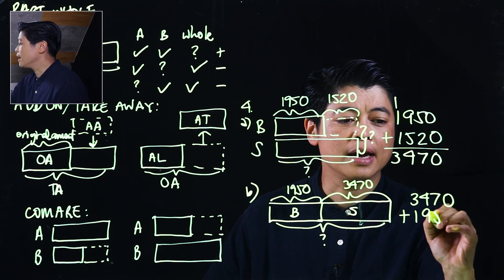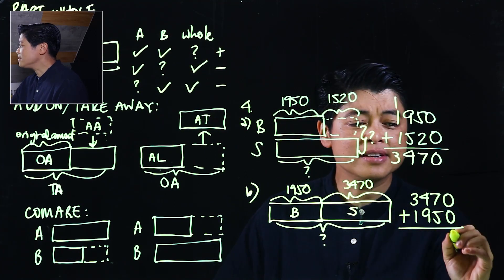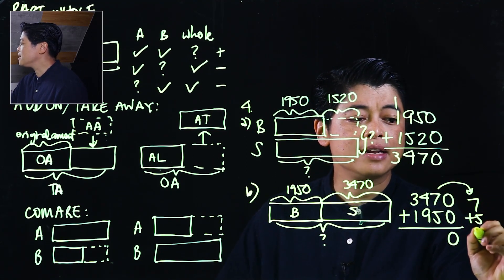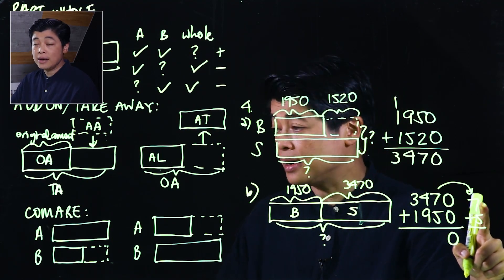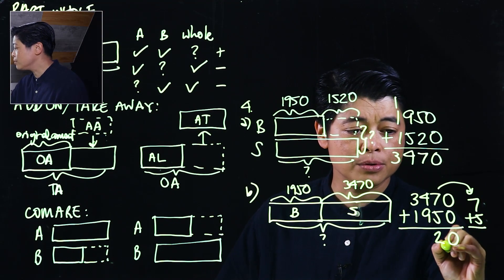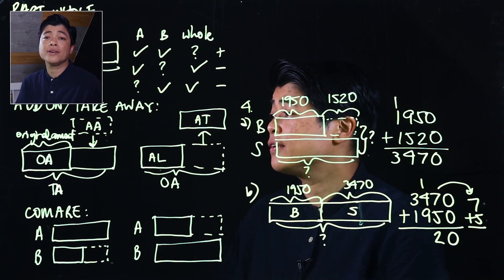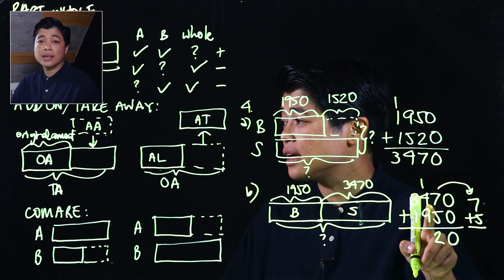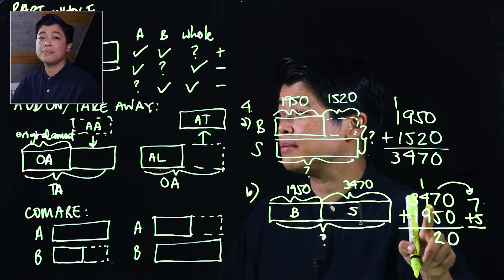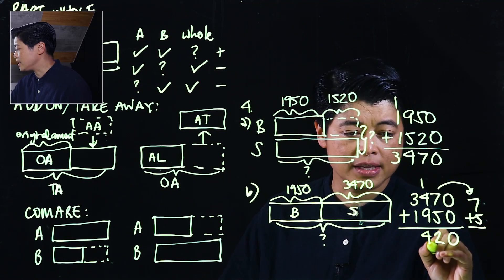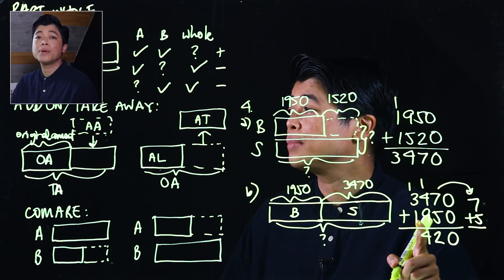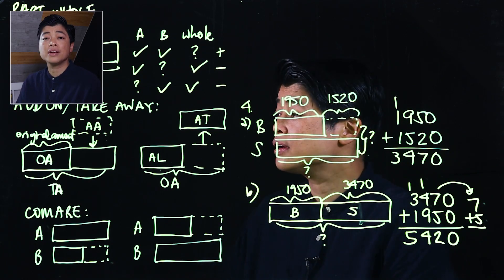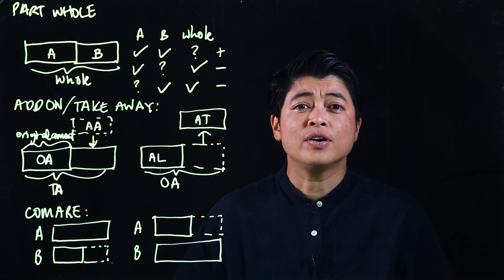Since we're looking for the altogether — the whole — this is another addition problem. We start with the bigger number: 3,470 plus 1,950. Adding right to left: 0 plus 0 is 0, 7 plus 5 gives 12 — carry the 1 — then 4 plus 9 plus 1 is 14 — carry the 1 — and 3 plus 1 plus 1 is 5. Altogether they sold 5,420 boxes.